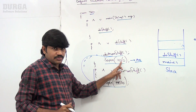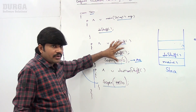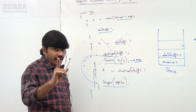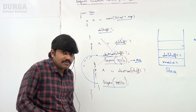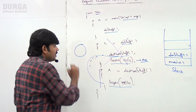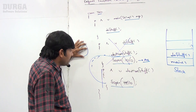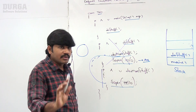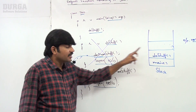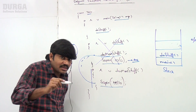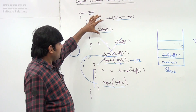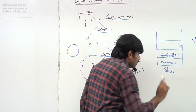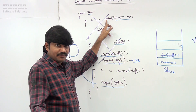Inside doStuff there is no exception handling code, so JVM terminates doStuff abnormally and removes its corresponding entry from the stack. An exception object is created and handed over to JVM. JVM checks whether doStuff has any handling code — no handling code. JVM then identifies the caller method, which is main. Main method also doesn't contain handling code, so JVM terminates main abnormally and removes its entry from the stack.